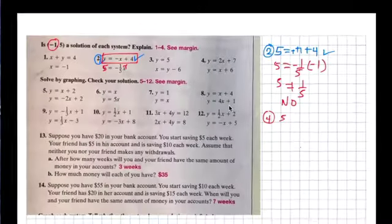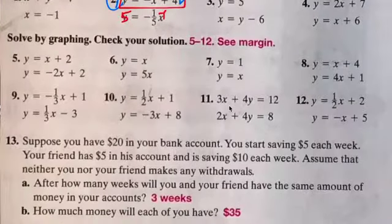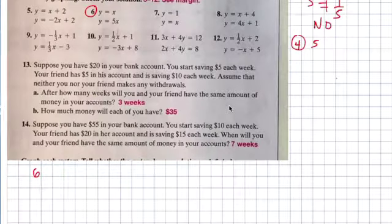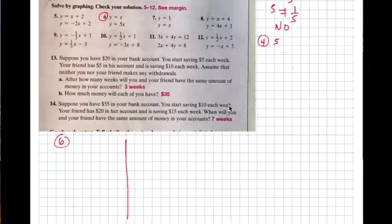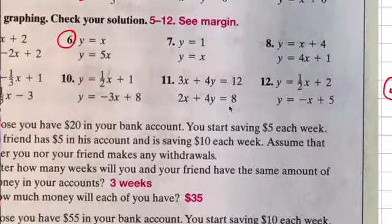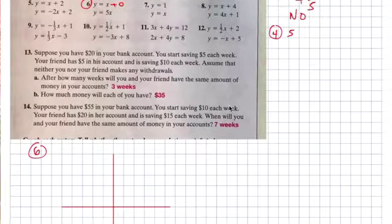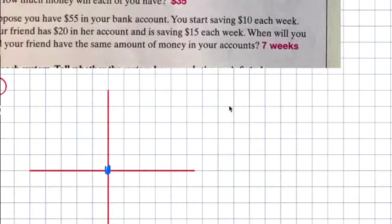Number six, graph it and check your solution. You don't have to check, just graph it. Make sure you use the graph paper. Here's how you graph: it's y equals x plus zero. If there isn't any y-intercept, it starts at zero. Zero is there.